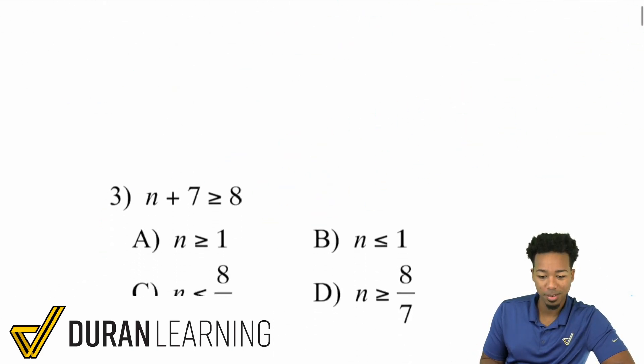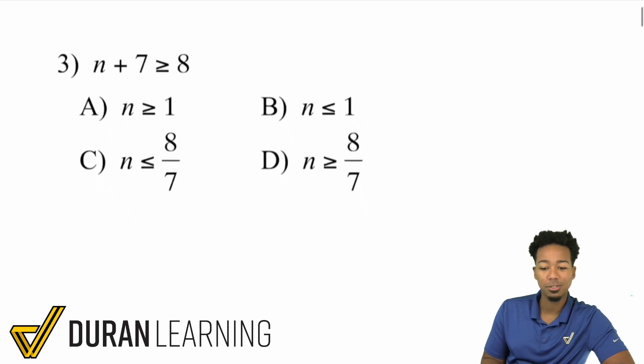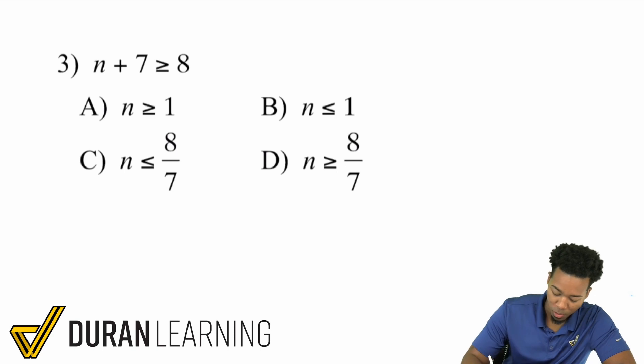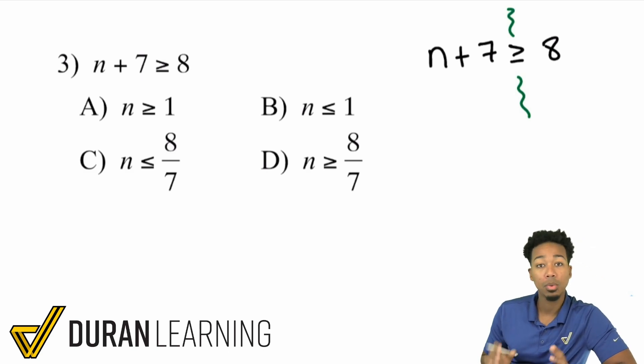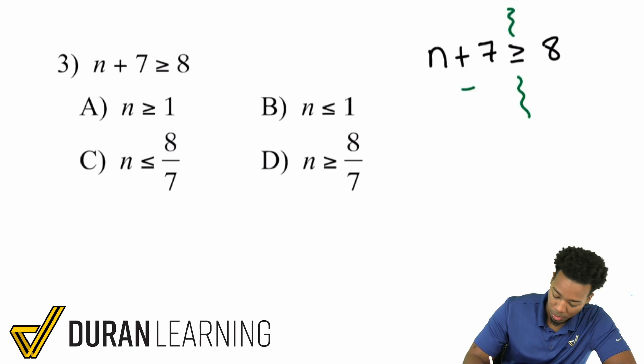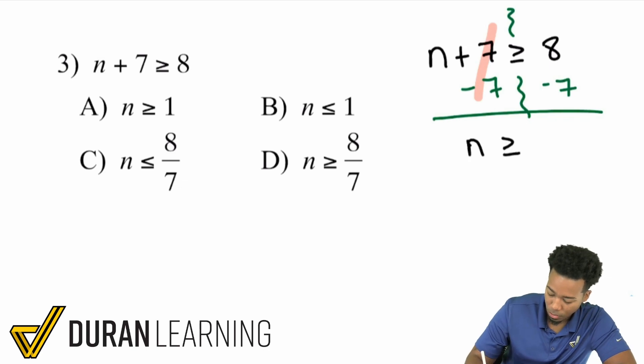So let's go ahead and go to number 3 here. Number 3, we have n plus 7 is greater than or equal to 8. So this is something that we're pretty much used to seeing at this point. But again, it's just an inequality, not an equation. But we solve it the same exact way. We're going to get rid of that plus 7, because again, we're basically looking at the n, and we want to get it by itself. So the opposite of adding 7 to both sides will be subtracting 7. Right there, cancels out on the left, leaving me with n is greater than or equal to positive 1. And there's a.